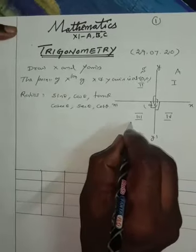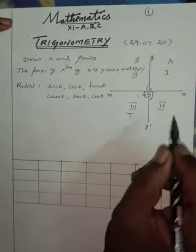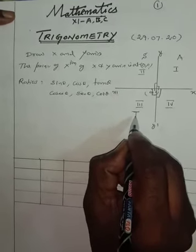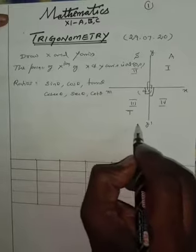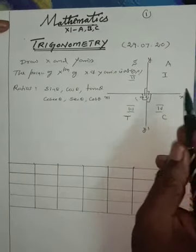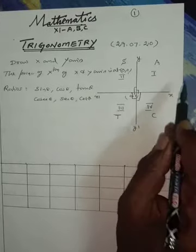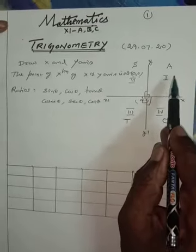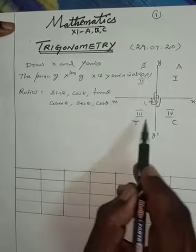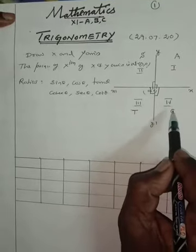In the third quadrant, T means tan theta and its reciprocal cot theta are positive. In the fourth quadrant, cos theta and its reciprocal secant theta are positive. Summary: first quadrant — all positive; second quadrant — sin and its reciprocal positive; third quadrant — tan and cot positive; fourth quadrant — cos and secant positive.